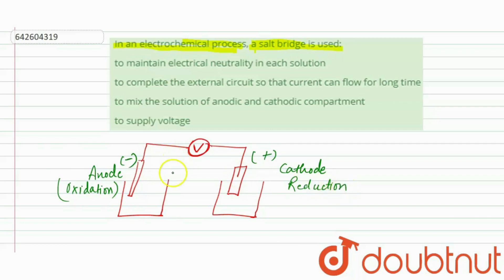And here is our cathode on which what happens is reduction. Okay. And here we use a salt bridge in an electrochemical cell. And it is our salt bridge. Salt bridge like KCl, AgNO3, etc. are used as a salt bridge in an electrochemical cell.